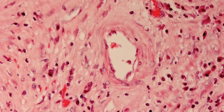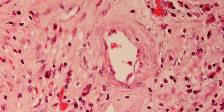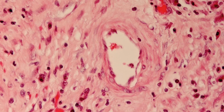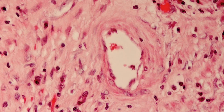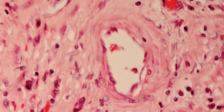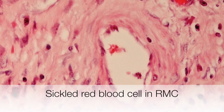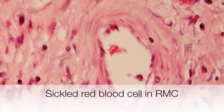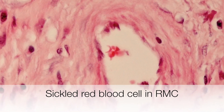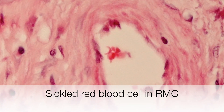Renal medullary carcinoma is a type of tumour that provides clues to the diagnosis before you actually look at it. An obvious clue is a black African American with sickle cell disease or sickle cell trait who is very young, around 20 for example. It is worth having a good look in the blood vessels in and around the tumour for sickle cells. We are zooming into a sickle red blood cell in the centre of the picture.